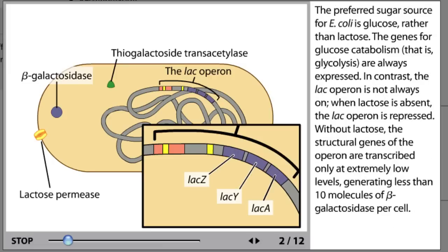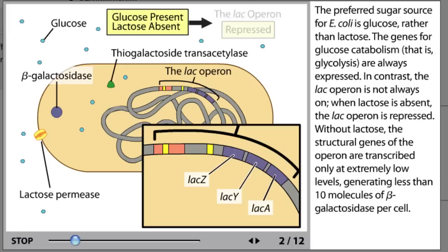The preferred sugar source for E. coli is glucose rather than lactose. The genes for glucose catabolism, that is glycolysis, are always expressed. In contrast, the lac operon is not always on. When lactose is absent, the lac operon is repressed. Without lactose, the structural genes of the operon are transcribed only at extremely low levels, generating less than 10 molecules of beta-galactosidase per cell.